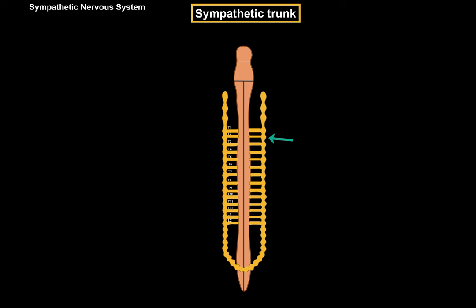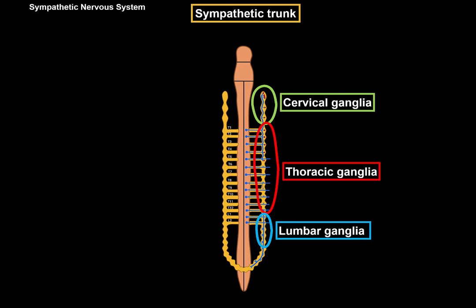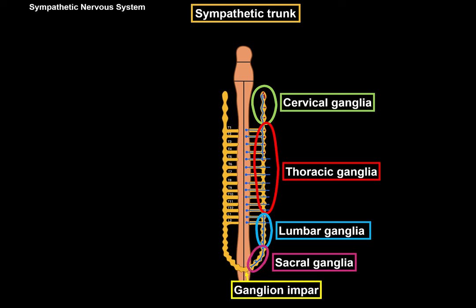When fibers reach the sympathetic trunk, they may ascend and synapse with nuclei above, descend, synapse at the same level, or leave as preganglionic fibers. The sympathetic trunk is divided into: cervical ganglia (usually 3 pairs); thoracic ganglia (approximately 10–12 pairs); lumbar ganglia (4–5 pairs); sacral ganglia (usually 4 pairs); and coccygeal ganglia, which are often fused together to form the ganglion impar — the unpaired ganglion at the bottom.